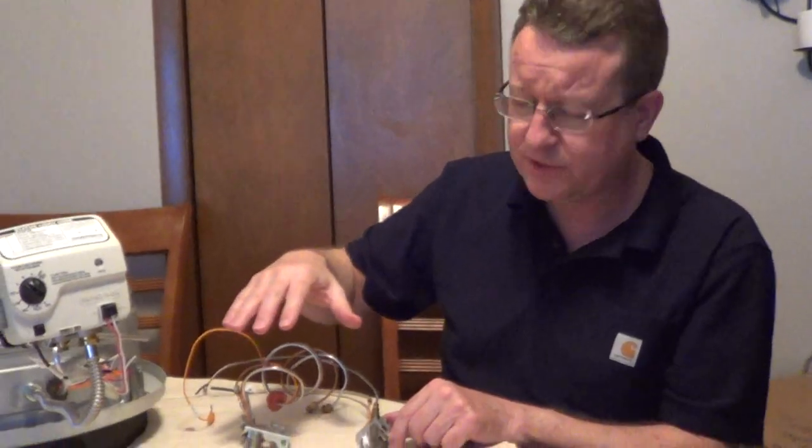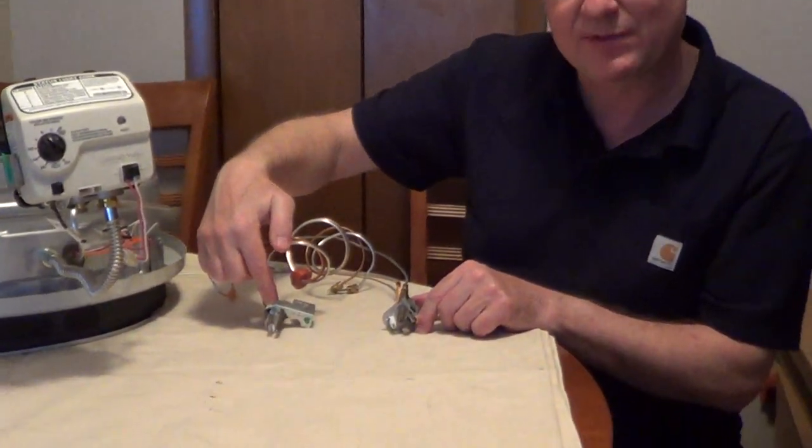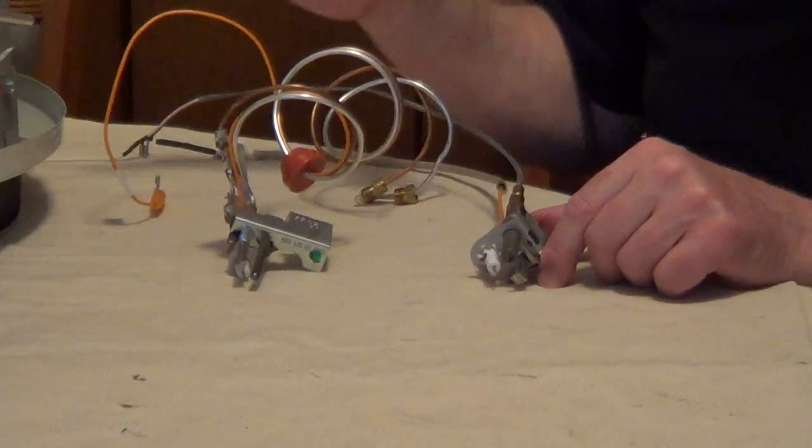I've had a question from homeowners on the difference between a thermocouple and a thermopile for a water heater. Before 2010, almost every manufacturer used a thermocouple to operate the gas control. This was your safety and generated about 75 millivolts.